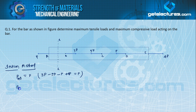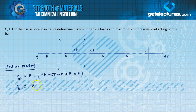Now let us talk about P_BC. For the BC section, we take an X section in the BC part and sum up forces on either the right or left side. Looking at the left hand side — towards left is positive — this P is positive and this 3P is negative, so this is equal to minus 2P. That means 2P compressive.